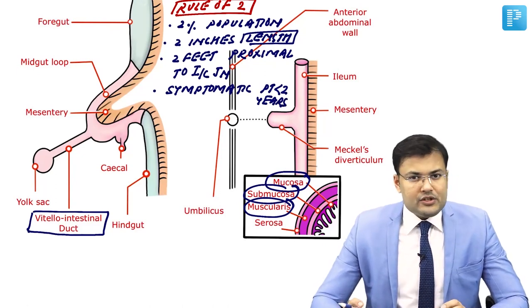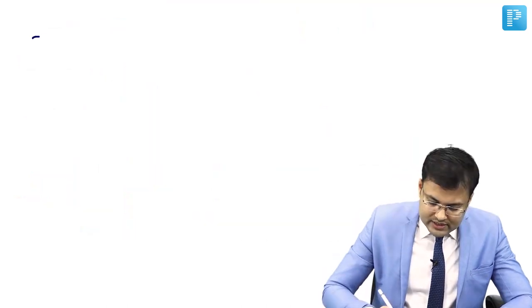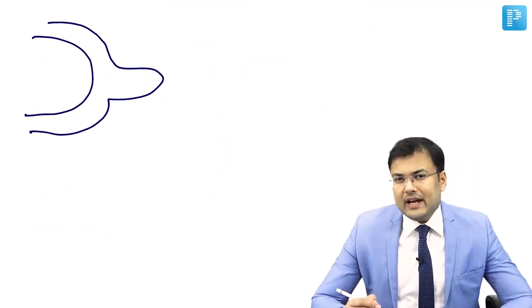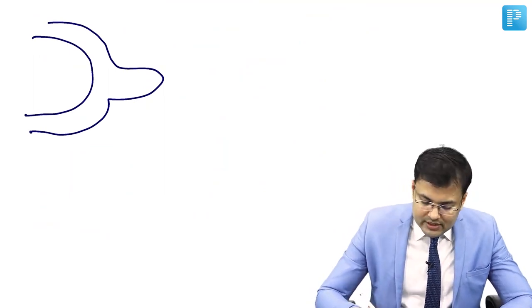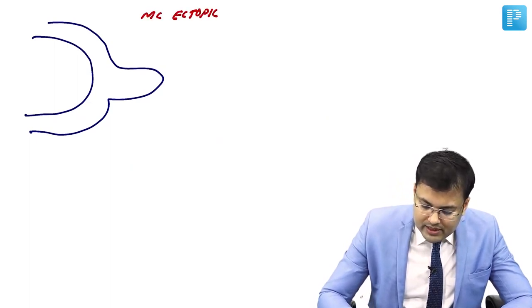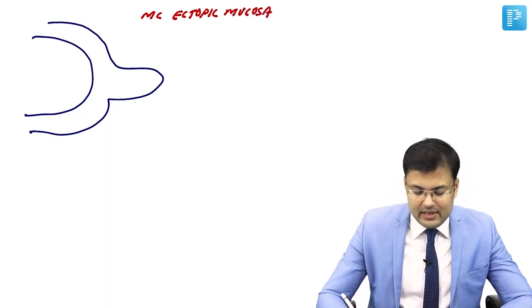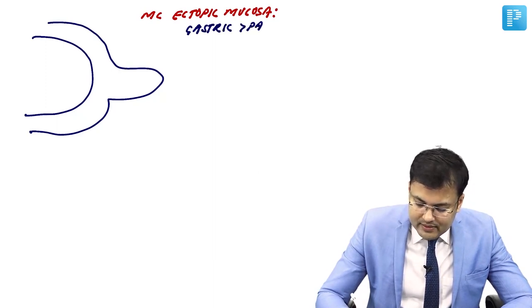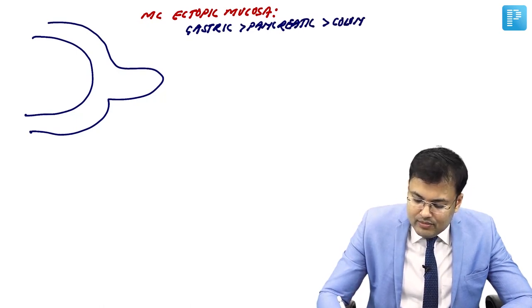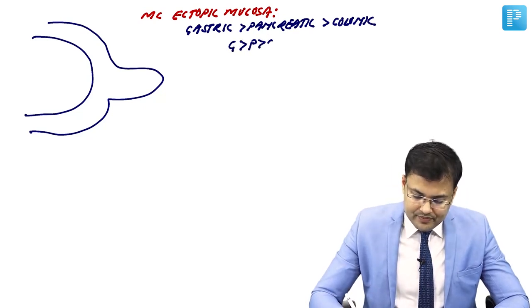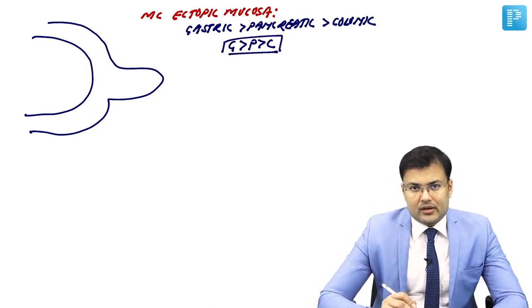Now see the pathophysiology to understand the clinical features. There is presence of ectopic mucosa in Meckel's diverticulum. The most common ectopic mucosa is gastric, followed by pancreatic, followed by colonic. The mnemonic is GPC — gastric, pancreatic, colonic.